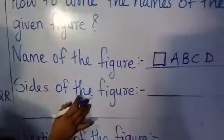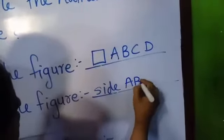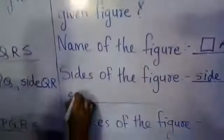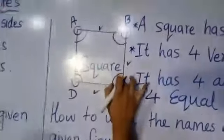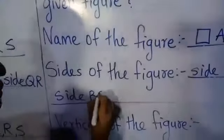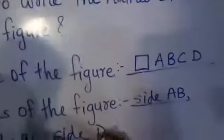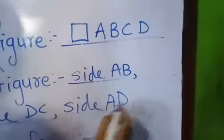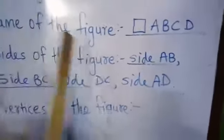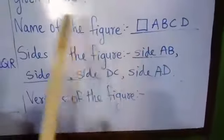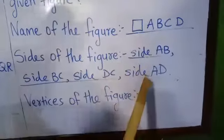The sides of the square are: side AB, side BC, side CD, and side AD. There are four sides — one, two, three, and four.